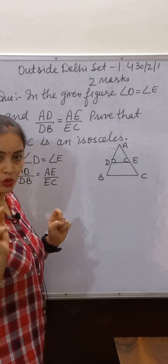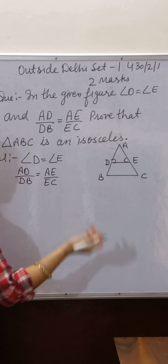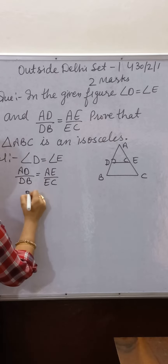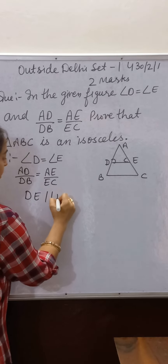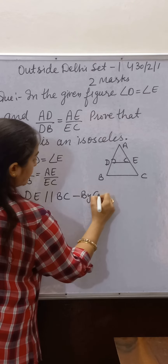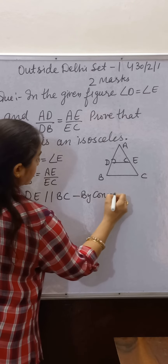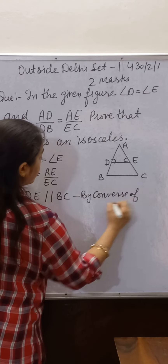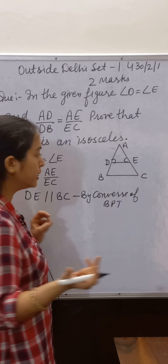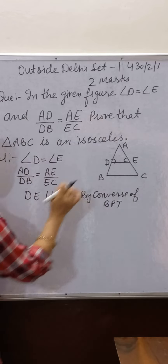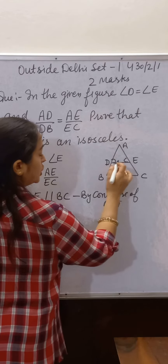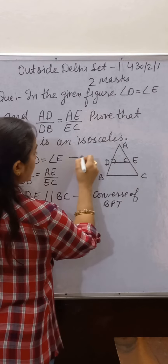Since these two parts are proportional, by the converse of BPT — the Basic Proportionality Theorem — we have DE parallel to BC.